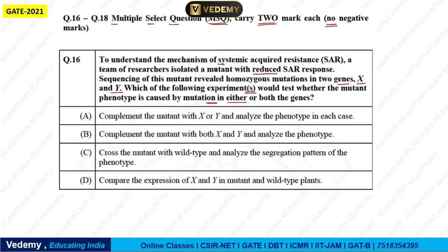We need to pick experiments where one gene complements the other — showing dependency. Option A says: complement the mutant with X or Y and analyze the phenotype in each case. This means complementing the mutant whether related to X or Y, and studying both phenotypes. This will tell us whether one or both genes are involved in the reduced SAR response. Yes, we can do this — option A is true.